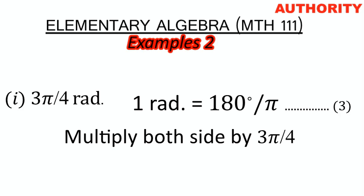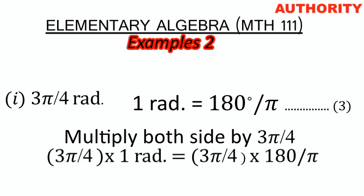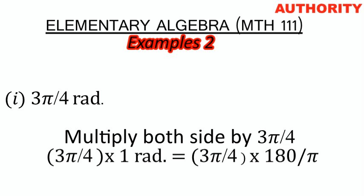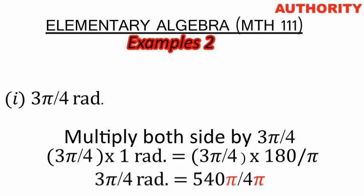Multiply both sides. On the left-hand side we have 1 radian multiplied by 3π/4, which gives us 3π/4 radians. On the right-hand side we have 180 over π multiplied by 3π/4, which gives us 180 times 3π, all over π times 4.